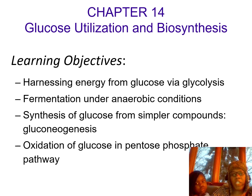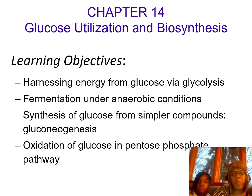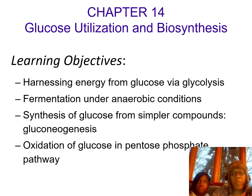Our learning objectives for this chapter is to learn the many steps of glycolysis, which is how we harness energy from glucose. We've already learned the structure of glucose, and now we're going to learn how we break that down into a three-carbon molecule called pyruvate and how we get energy from glucose. We'll learn about fermentation, which is that breakdown under anaerobic or conditions without oxygen. We'll learn the synthesis of glucose — sometimes you actually need to synthesize glucose from simpler compounds, and that is called gluconeogenesis. And then we'll learn about oxidation of glucose and the pentose phosphate pathway.